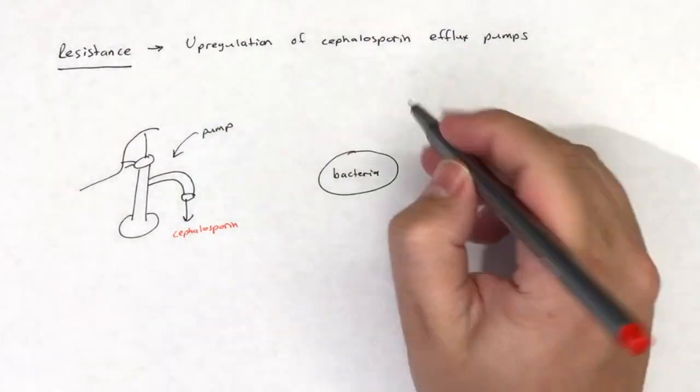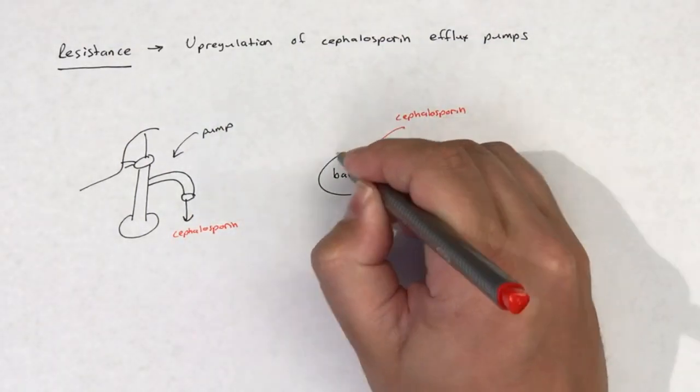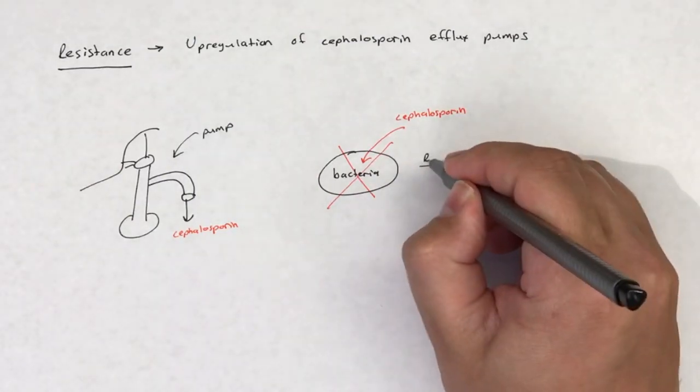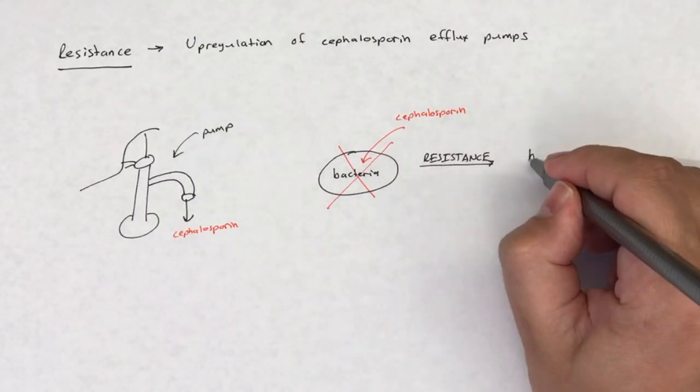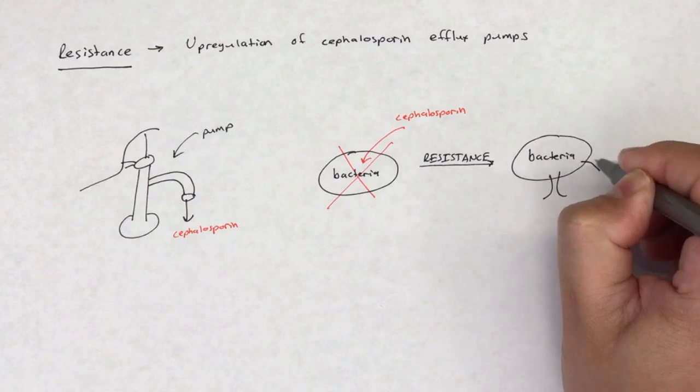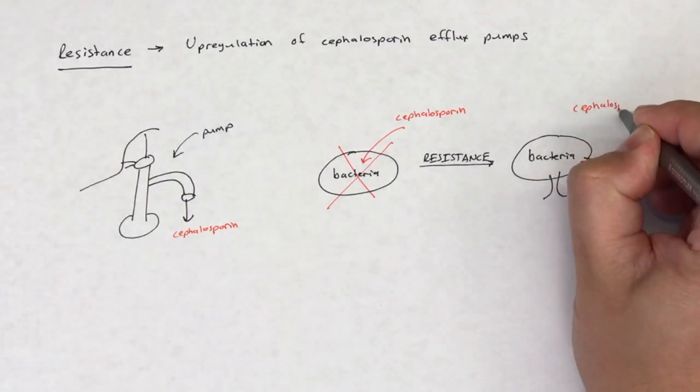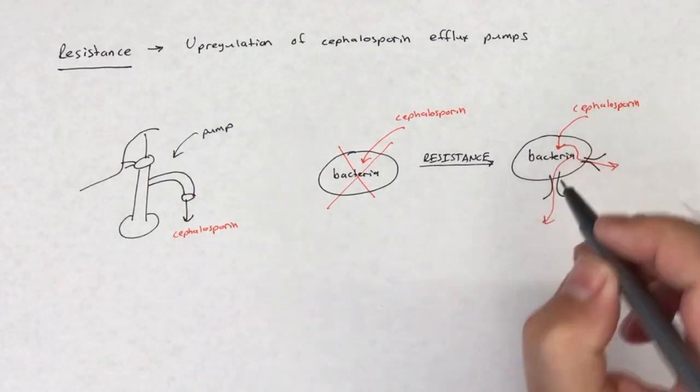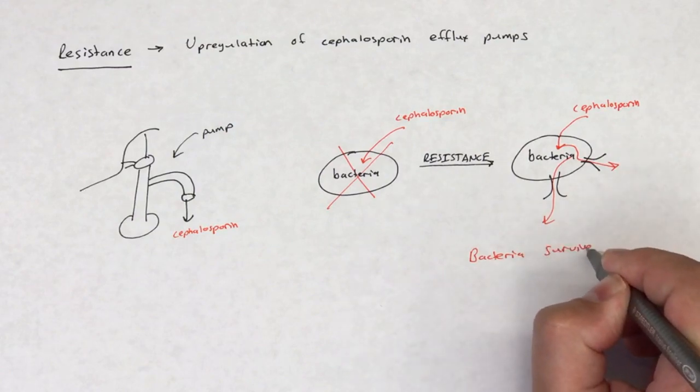Normally, a cephalosporin is able to kill the bacteria. However, efflux of the cephalosporin decreases the intracellular concentration of the cephalosporin and decreases its effectiveness to inhibit cell wall synthesis. This leads to bacterial survival.